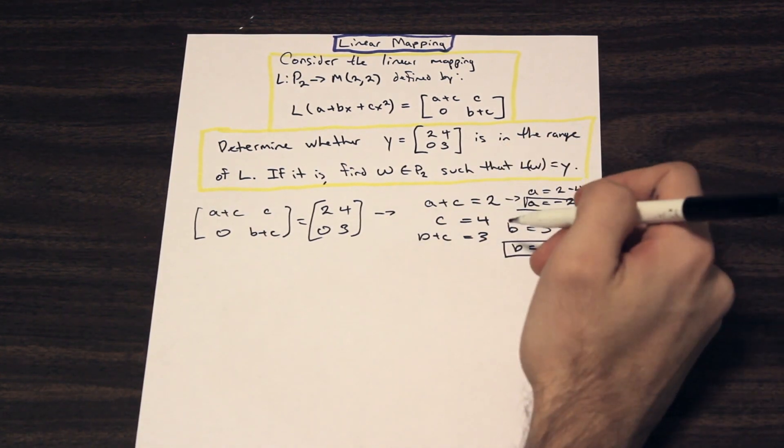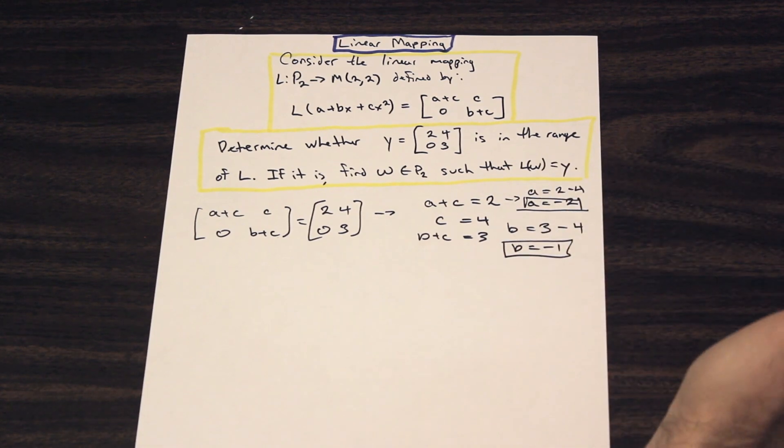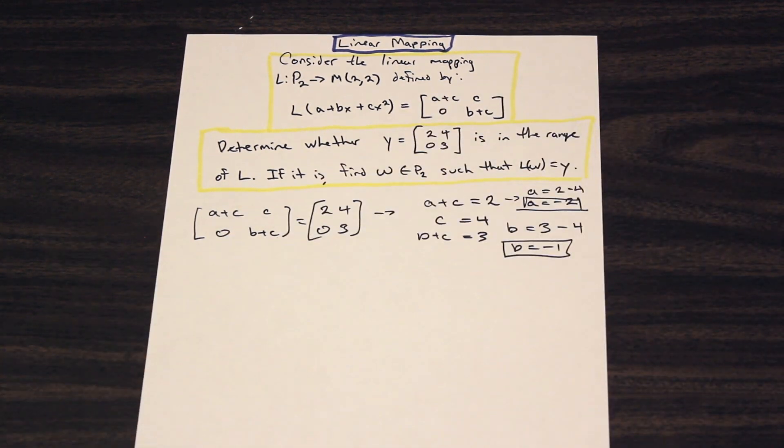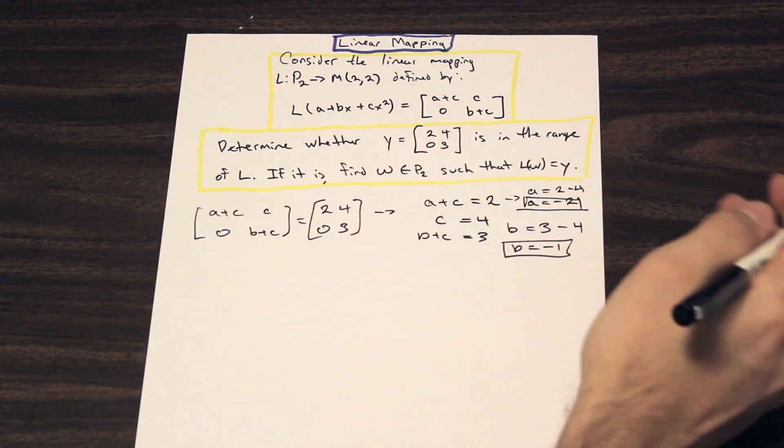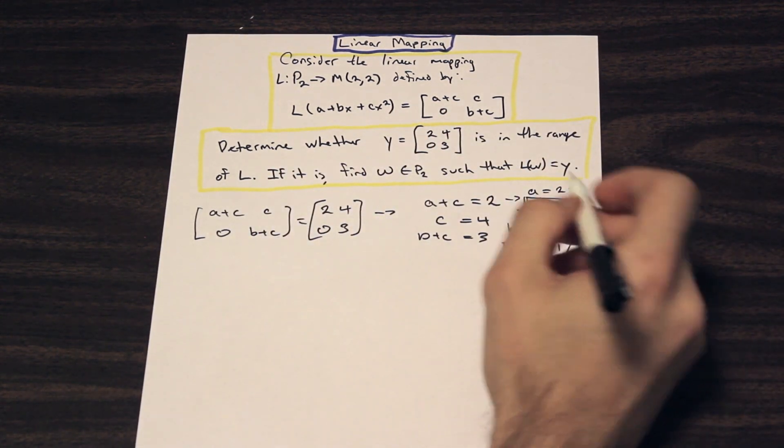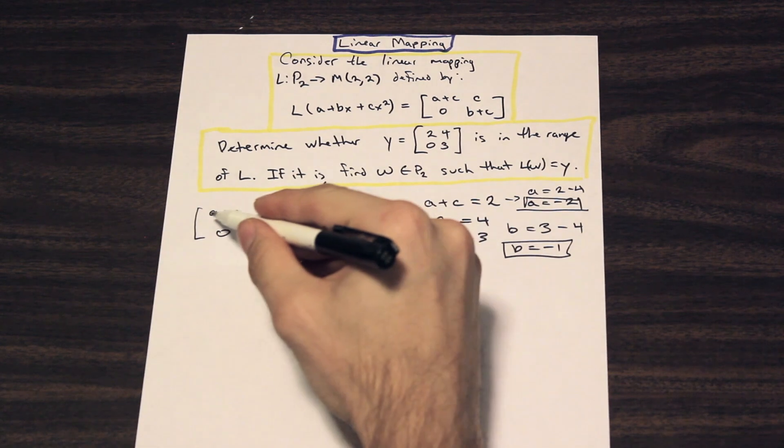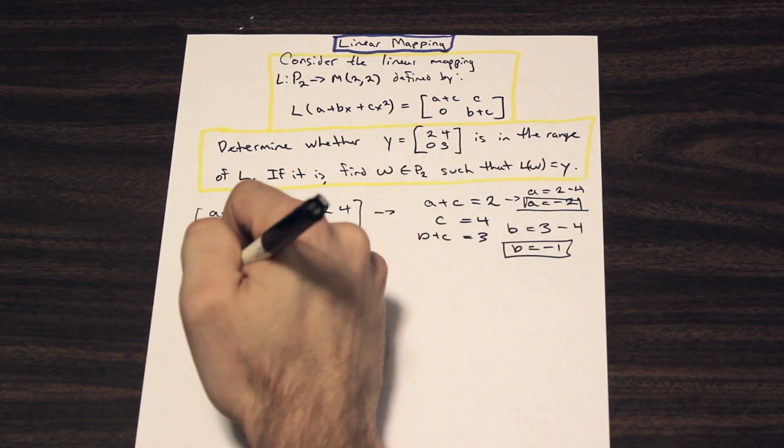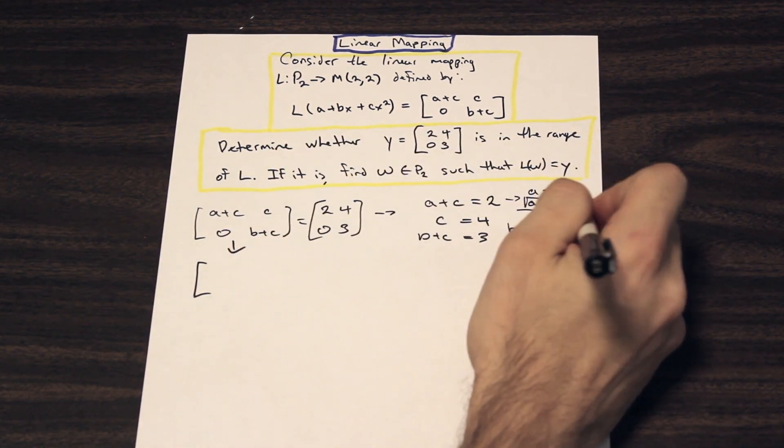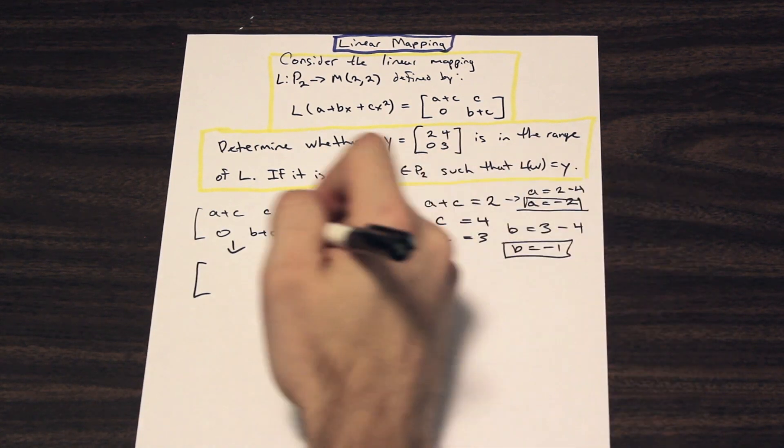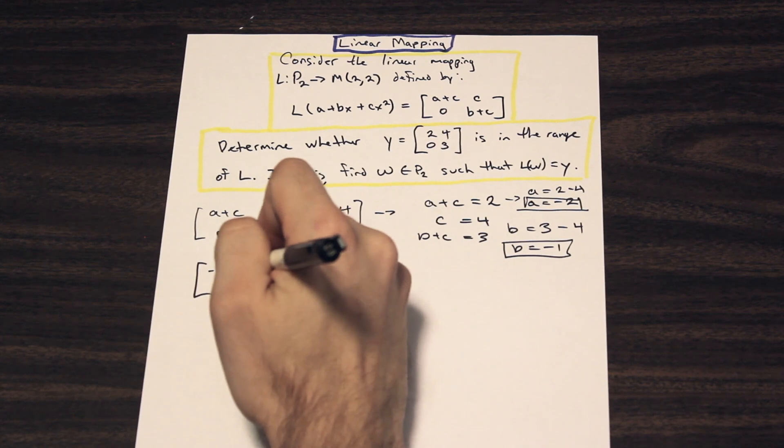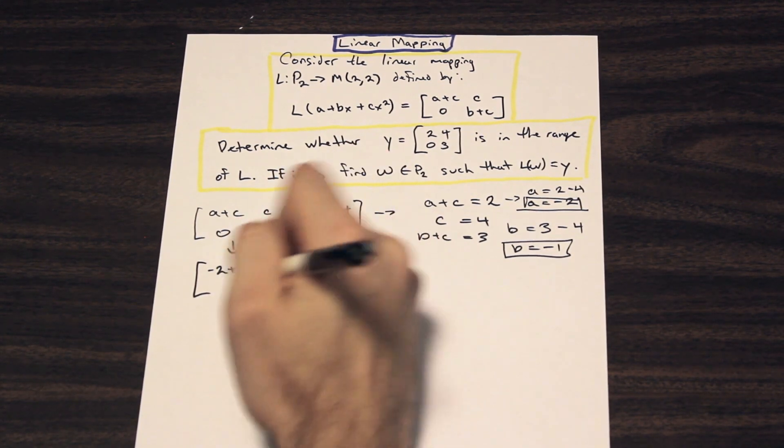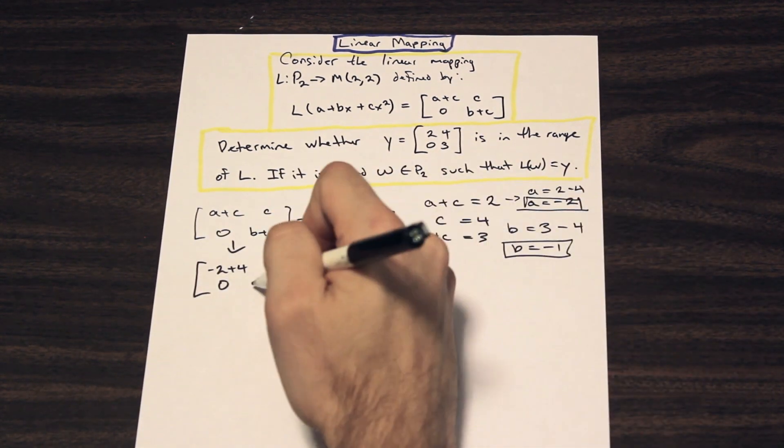Simple as that. So we're going to solve this system of equations. We're going to get what A, what B, and what C are. And what we're going to do is we're going to plug in these values into this matrix. So let's go ahead and do that. So if we plug in here, we're going to have, what's our A value? Negative 2, C is 4, right? So that's going to be negative 2 plus 4, C is 4, this is still 0, and B is negative 1.